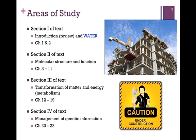Understanding function can enable us to fit it into the larger context of the cell or organism. We will reserve our consideration of Chapter 3 for Section 4 of the text, as we will describe later. In Section 3, we will be concerned with the transformation of matter and energy, that is, metabolism. This will include Chapters 12 through 19. Lastly, we will consider the management of genetic information in Section 4, including Chapters 20 through 22, as well as Chapter 3.